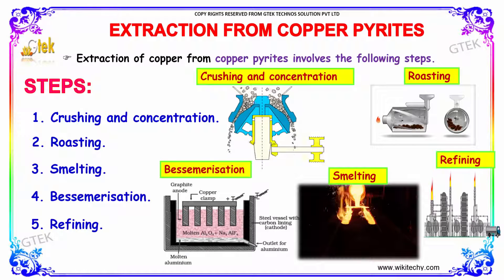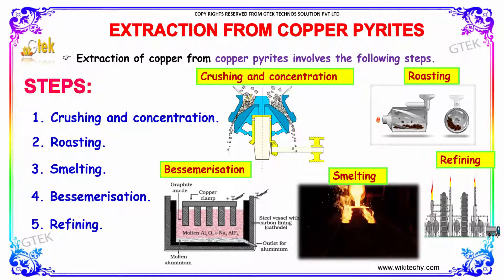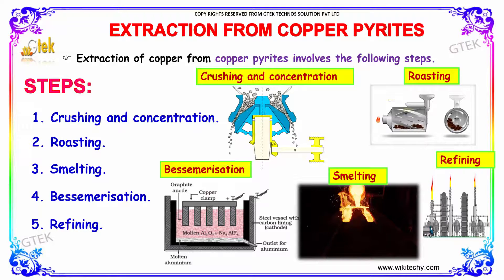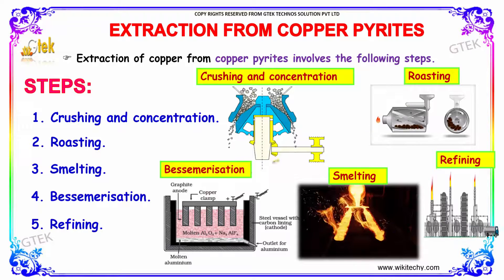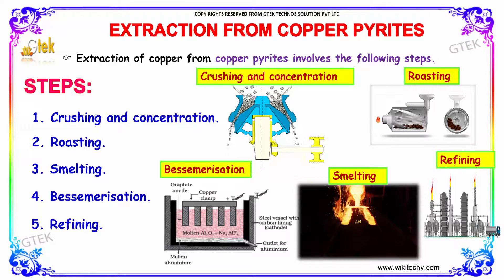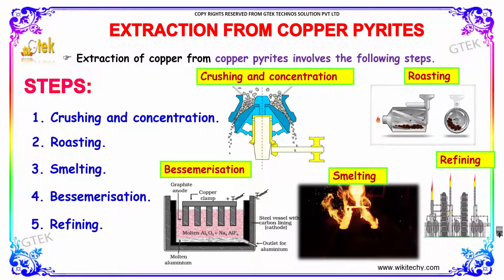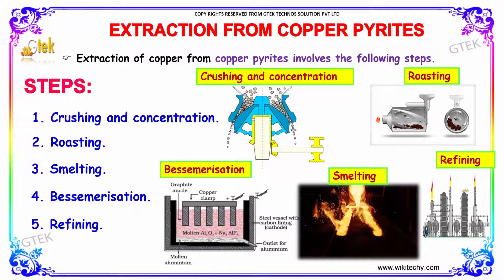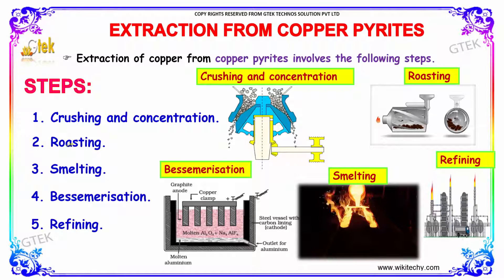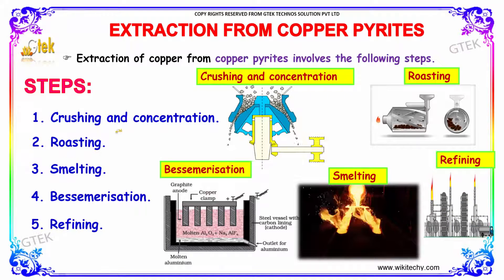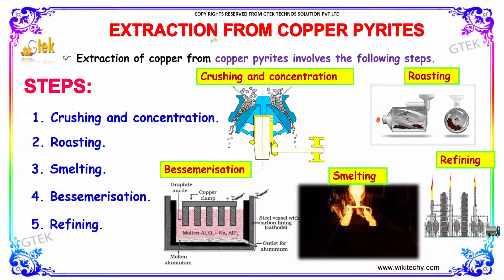Now, let's talk about the extraction of copper. The first step is crushing, breaking into smaller particles, followed by roasting, then smelting, bessemerization, and finally refining. These are the various steps available to extract the copper from copper pyrites.